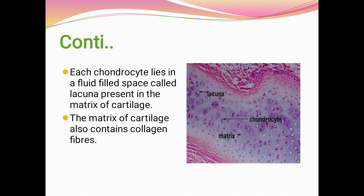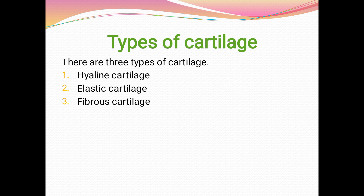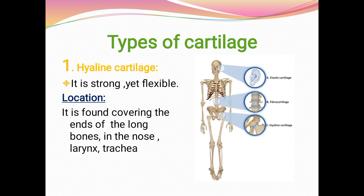Each chondrocyte lies in a fluid-filled space called a lacuna, present in the matrix of cartilage. The matrix of cartilage also contains collagen fibers. Blood vessels do not enter cartilage. There are three types of cartilage: hyaline cartilage, elastic cartilage, and fibrous cartilage.